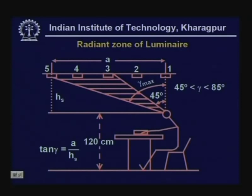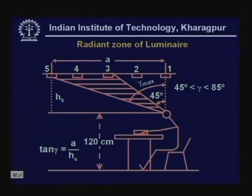Under the British system, the zone of illumination has upper and lower limits fixed at 45 degrees to 85 degrees. The plane of vision is typically at 1.2 meters — the height at which an average person working at a table has their eye level. The critical angle gamma can vary from a minimum of 45 to a maximum of 85 degrees. Gamma max is defined with respect to the straight line from the farthest luminaire to the eye; it should be less than 85 degrees, otherwise there is scope for creating trouble.